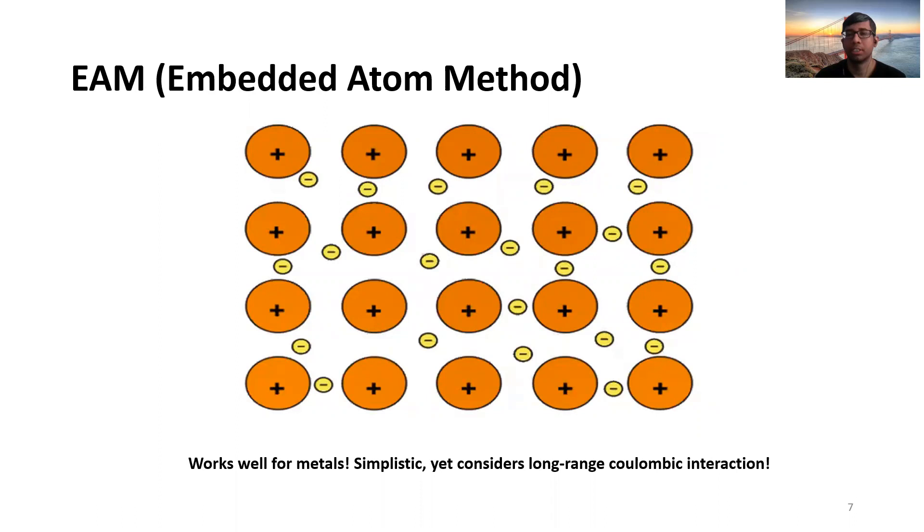That's why it's called embedded - as if the atom is embedded in electron charge. You can think about the electron configuration model for metals from your high school chemistry book.